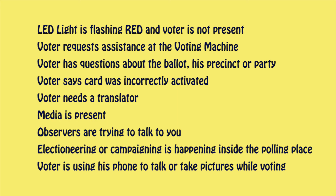Call the team leader for any of the following situations: the LED light is flashing red and the voter is not present; the voter requests assistance at the voting machine; the voter has questions about the ballot, his precinct, or party; the voter says the card was incorrectly activated; the voter needs a translator; media is present; observers are trying to talk to you; electioneering or campaigning is happening inside the polling place; or if a voter is using his phone to talk or take pictures while voting. This completes Chapter 3.